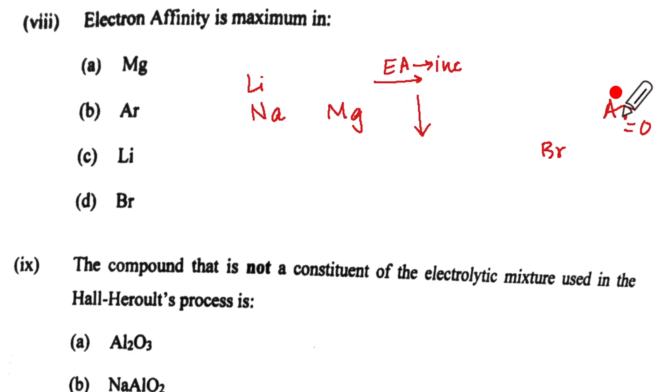So out of this argon seems to be extreme on the right hand side but it's going to have electron affinity 0, is going to be Br. So the correct option is Br.